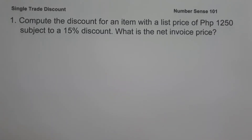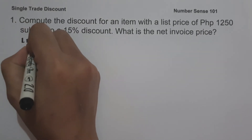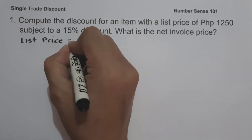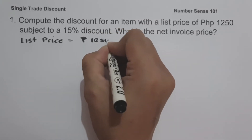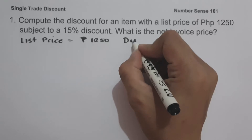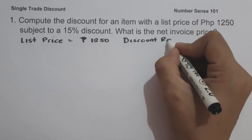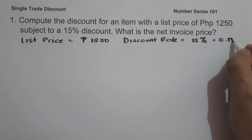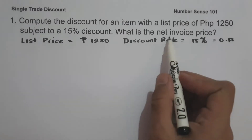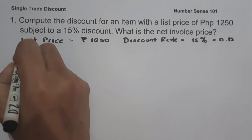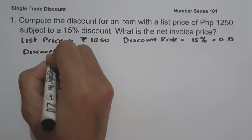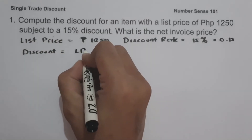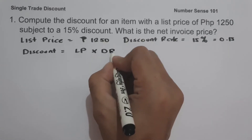To determine the net invoice price, or the price after the deduction, let us identify first our given. The list price is one thousand two hundred fifty pesos and the discount rate is fifteen percent, or zero point fifteen in decimal. To find the net invoice price, let us determine first the discount. The formula to find the discount is: list price multiplied by the discount rate.